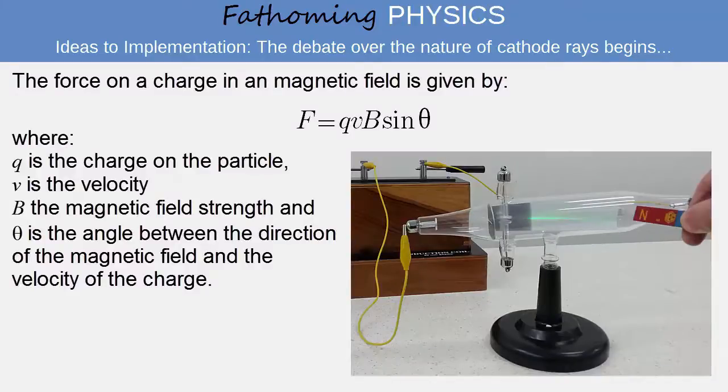The force a charge experiences in a magnetic field is the product of its charge Q, the magnetic field strength B, its velocity V, and the sine of the angle between the magnetic field and the velocity of the charge.